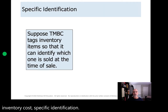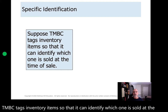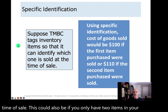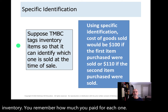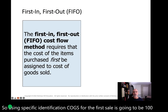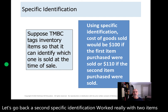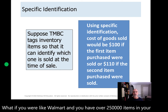Suppose TMBC tags inventory items so that it can identify which one is sold at the time of sale. This could also apply if you only have two items in your inventory and you remember how much you paid for each one. Using specific identification, COGS for the first sale is going to be $100 and COGS for the second sale would obviously be $110 because there were only two. Specific identification worked really well with two items, but what if you were like Walmart and have over 250,000 items in your inventory? You're likely not going to remember what you paid for each one, so we need a different method for larger amounts of inventory.